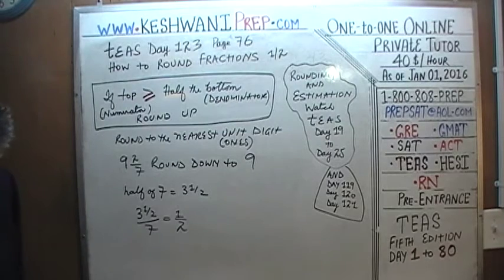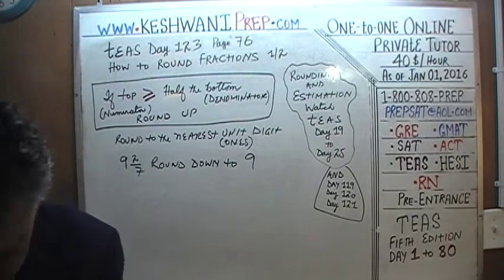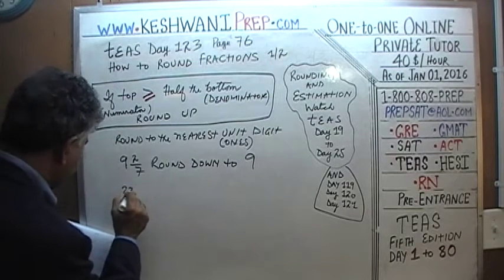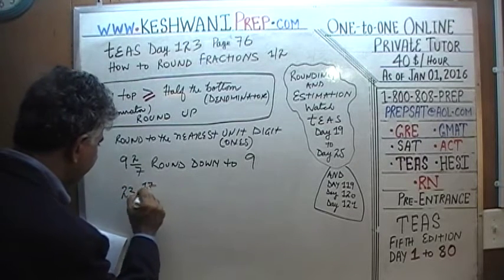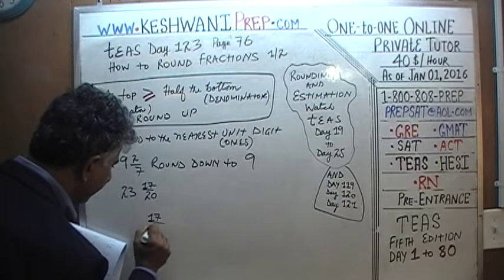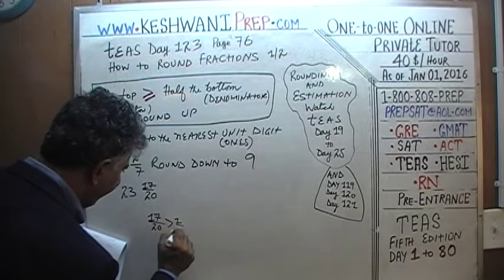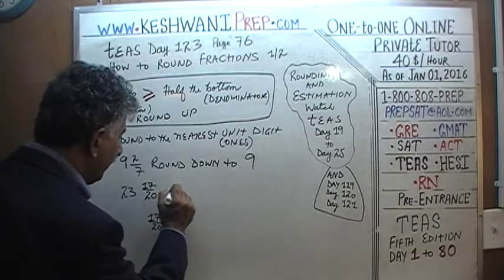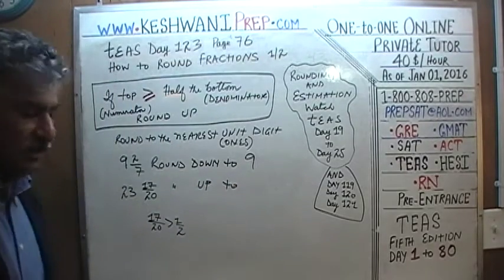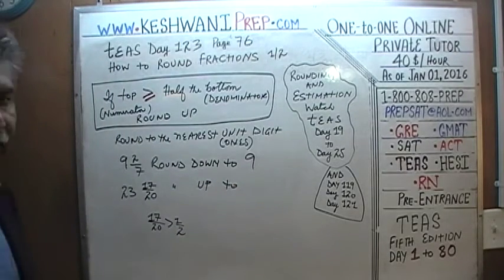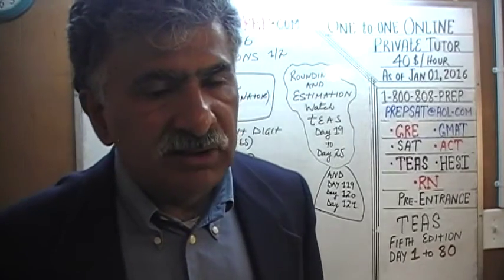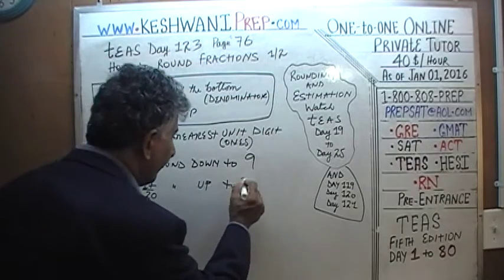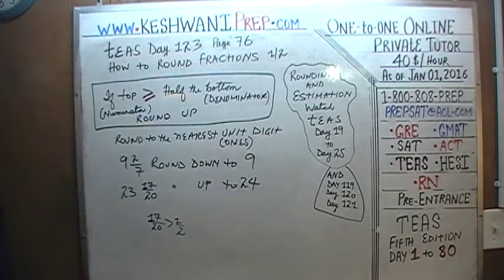How about 23 and 17/20? We can clearly see that 17/20 is more than half because half of 20 is 10. Since 17/20 is more than half, we're going to round it up. The nearest unit digit to 23 and 17/20 is 24.